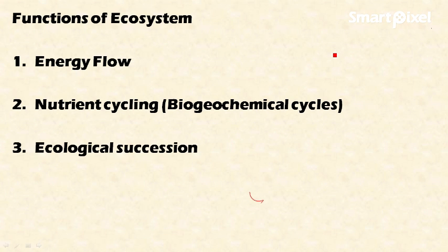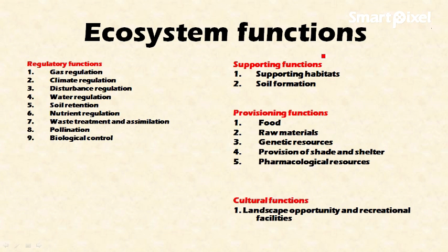Welcome friends. In this video, let's discuss the functions of ecosystem. Broadly, there are three important functions of ecosystem: energy flow, nutrient cycling, and ecological succession. Nutrient cycling is also called biogeochemical cycles.